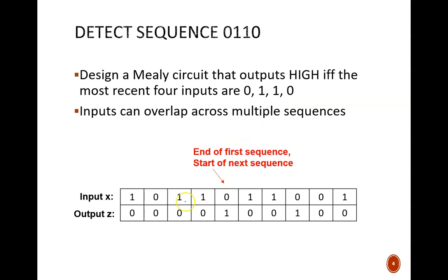It actually occurs two times, once after the first four bits, and then again three bits later. As such, the output signal will be high at those two points in time. This middle 0 actually overlaps between those sequences, serving as the final 0 of the first sequence, and the starting 0 of the second sequence.